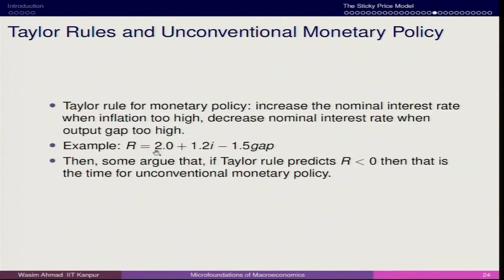At the natural rate of interest, there is no deviation in the economy. These two variables — inflation and the output gap — play a very important role. If the output gap is 0, then 0 × 1.2 = 0 and 0 × 1.5 = 0, which means the nominal interest rate is equivalent to the natural rate of interest. This is the ideal scenario, but in real life it may not always be the case.